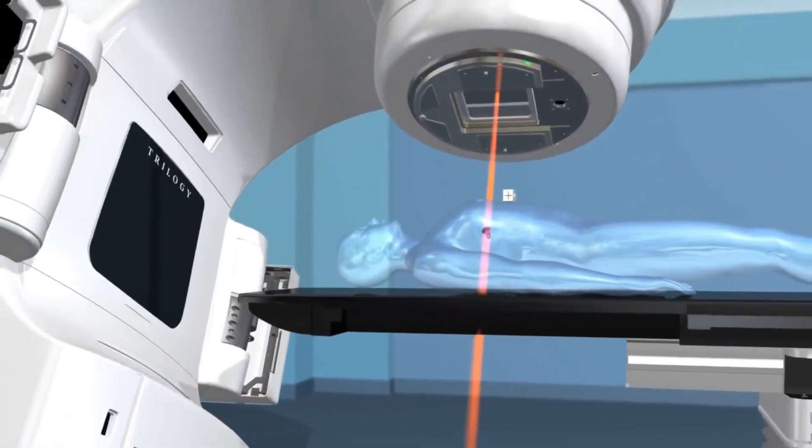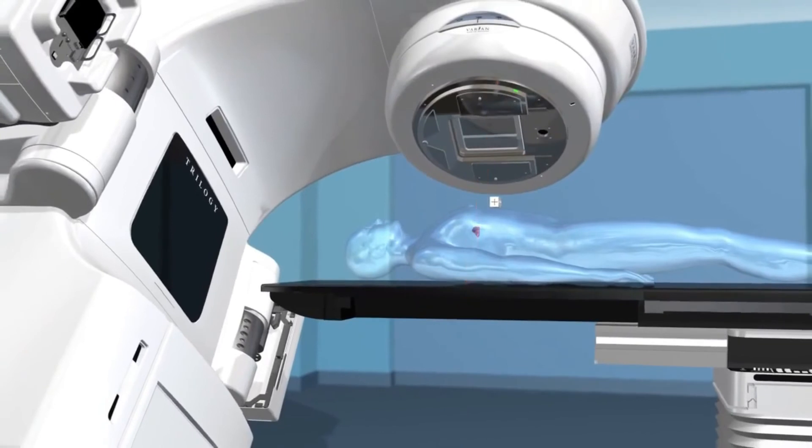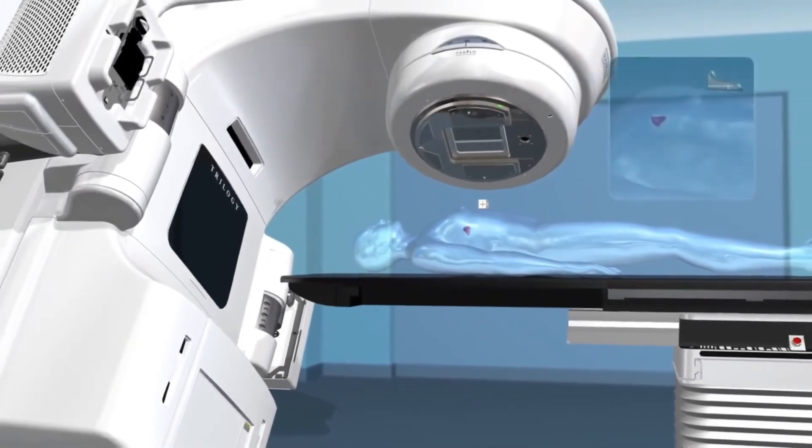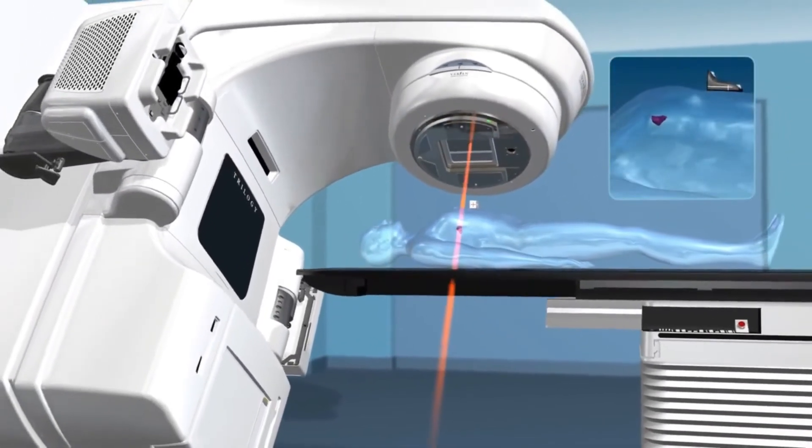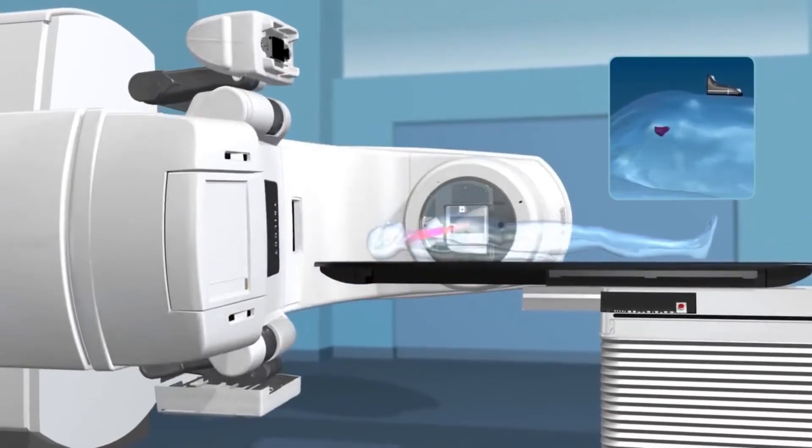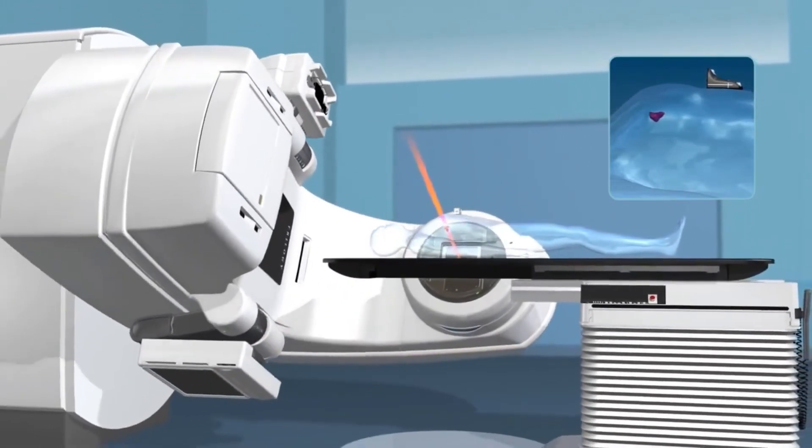To help align the target and radiation equipment, some IGRT procedures may use fiducial markers, ultrasound, MRI, x-ray images of bone structure, CT scans, 3D body surface mapping, electromagnetic transponders, or colored ink tattoos on the skin.